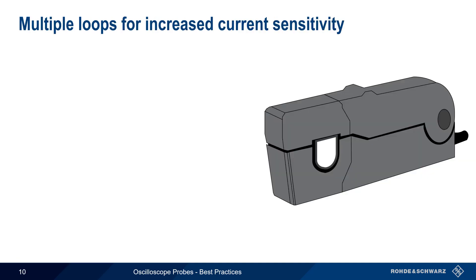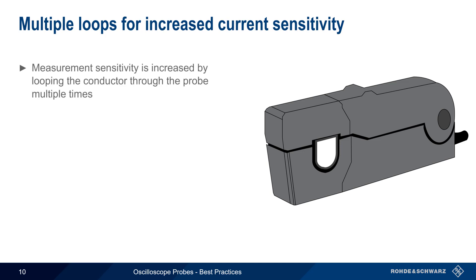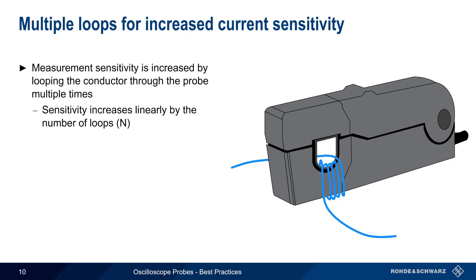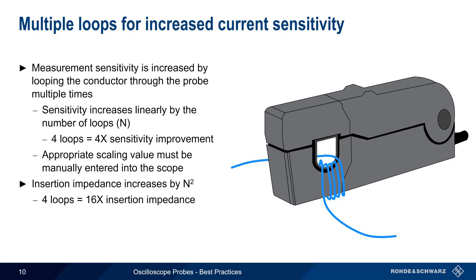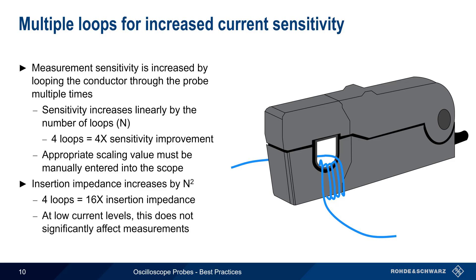Another tip regarding current probes is how to increase current measurement sensitivity. One technique is looping the conductor through the probe multiple times. The sensitivity of the probe increases linearly with the number of loops — looping the conductor through four times improves sensitivity by a factor of four. Since the scope has no way to know how many times the conductor has been looped, an appropriate scaling value must be manually entered into the scope. These loops also increase the insertion impedance by the square of the number of loops, so four loops would increase the insertion impedance by a factor of 16. However, this increased insertion impedance is usually still quite small and does not significantly affect measurements at low current levels.